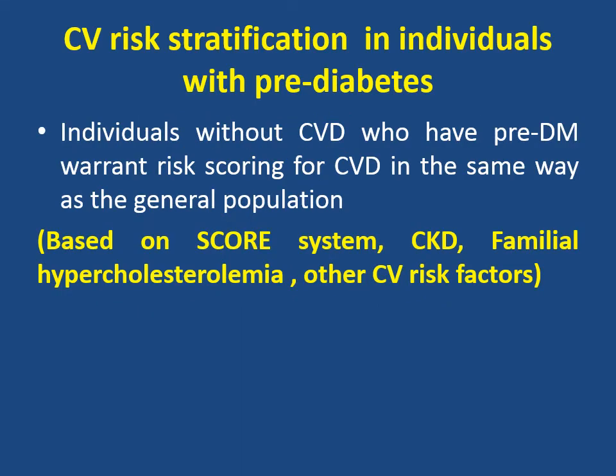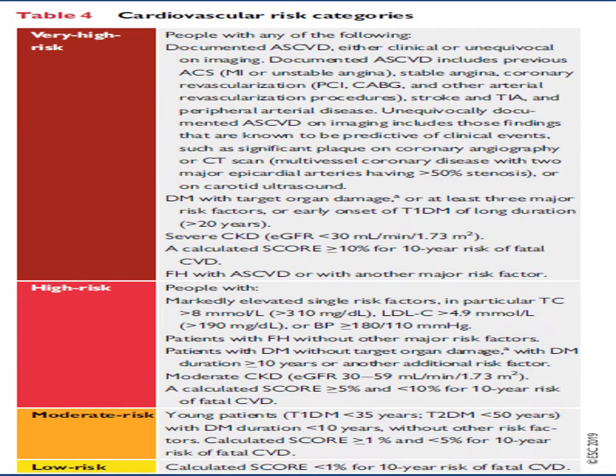What about cardiovascular risk stratification in individuals with pre-diabetes? Individuals without cardiovascular disease who have pre-diabetes run risk scoring for cardiovascular disease in the same way as the general population, based on the SCORE system, presence of chronic kidney disease, familial hypercholesterolemia, or other cardiovascular risk factors.